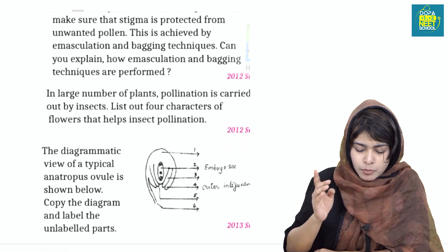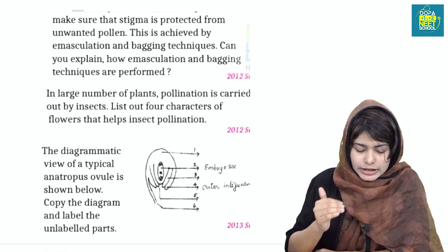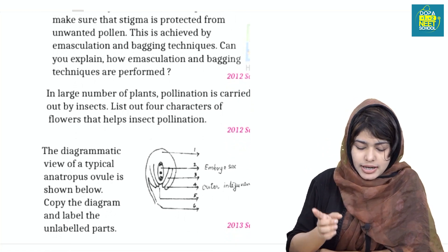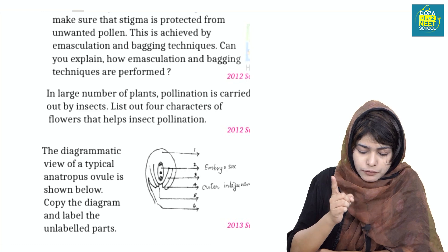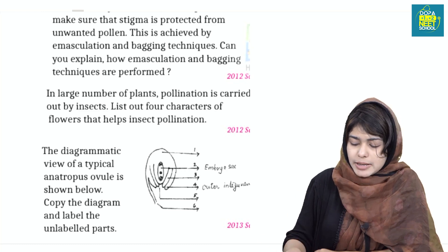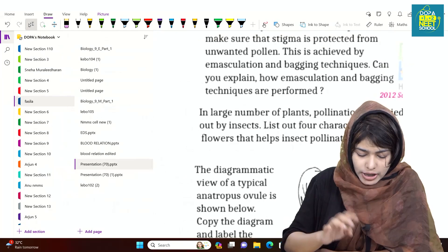Pollination is carried out by insects. List out four characters of flowers that help in insect pollination.